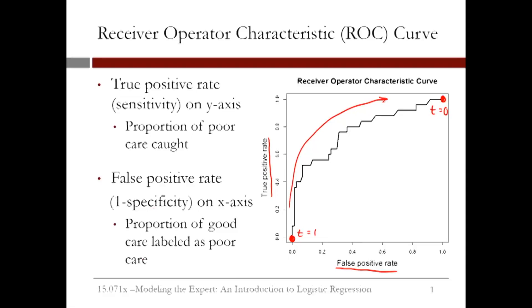At the point (0, 0.4), or about here, you're correctly labeling about 40% of the poor care cases with a very small false positive rate.